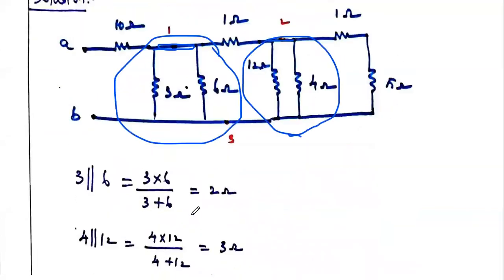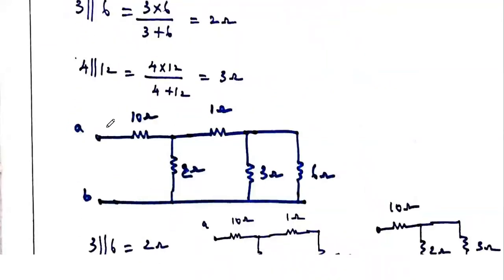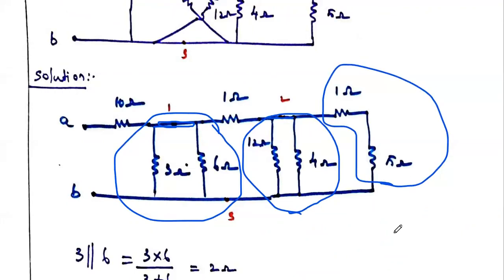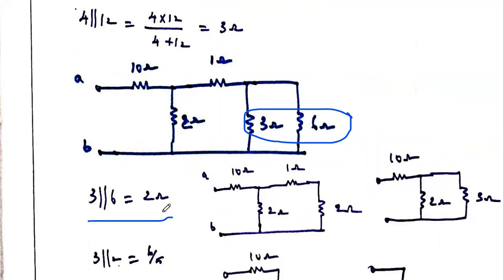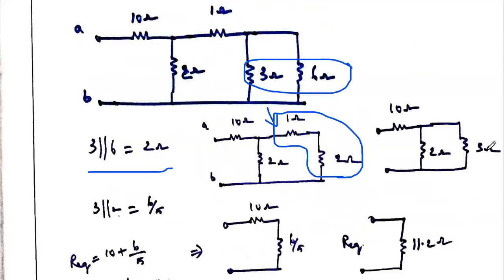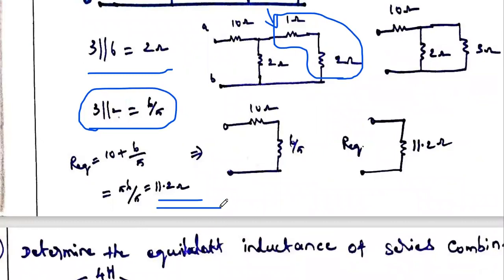Replacing the parallel combinations: 2 ohm, 3 ohm, and the remaining 10 ohm, one ohm, one ohm, five ohm. Five ohm and one ohm in series = 6 ohm. Then three ohm and six ohm in parallel = 2 ohm. Two ohm and one ohm in series = 3 ohm. Three ohm and two ohm in parallel = 6/5 ohm. Finally, 10 ohm + 6/5 in series = 11.2 ohm.